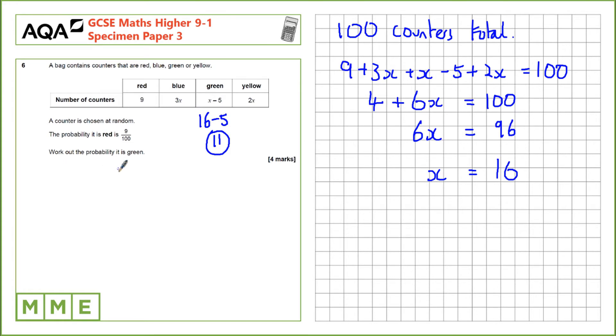The last thing we need to do to calculate the probability, we need the number of counters that's 11 green ones divided by the total number of counters we could potentially choose from which is 100 counters. The final probability is 11 over 100, the probability that it is green.